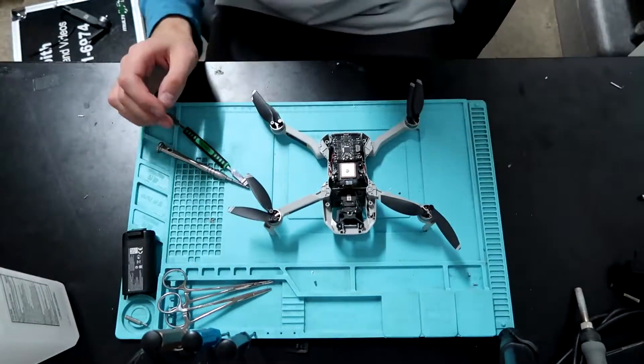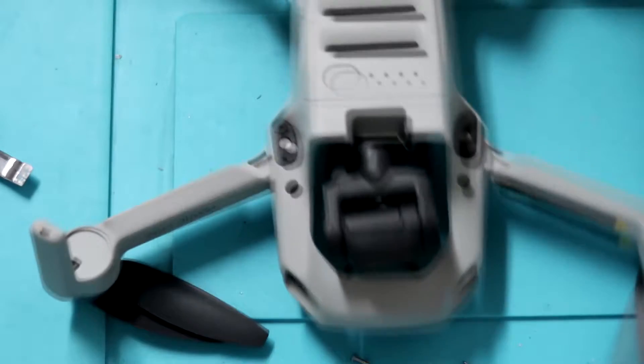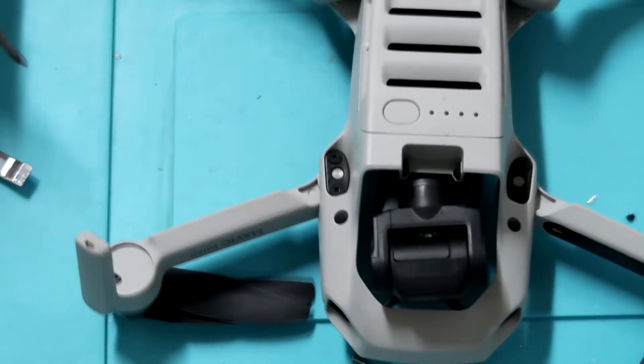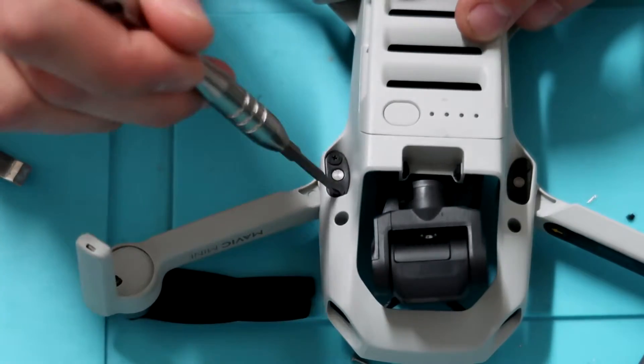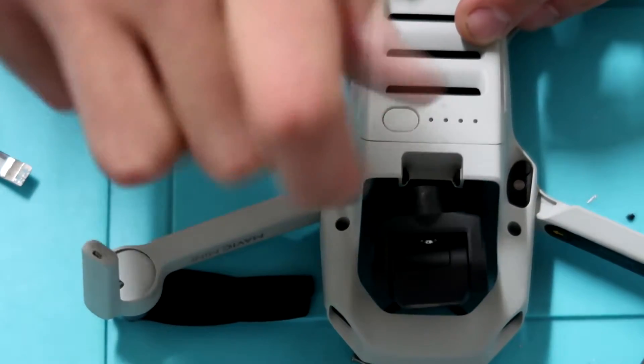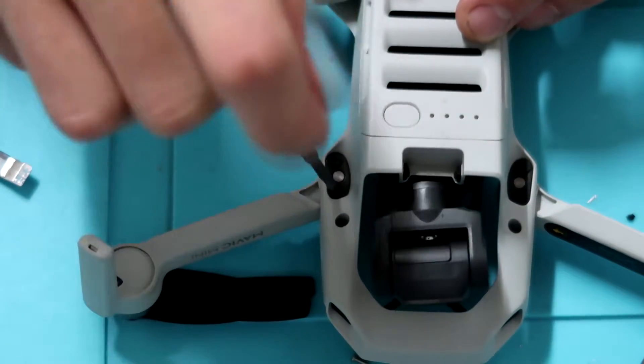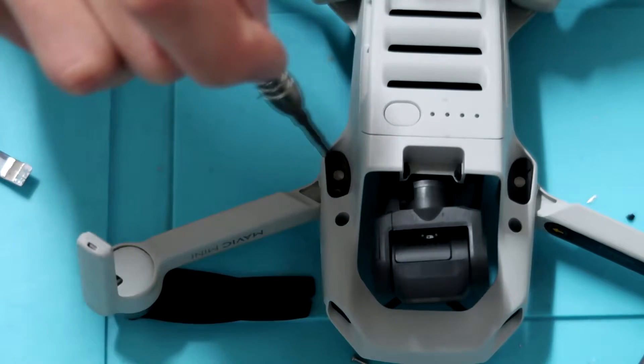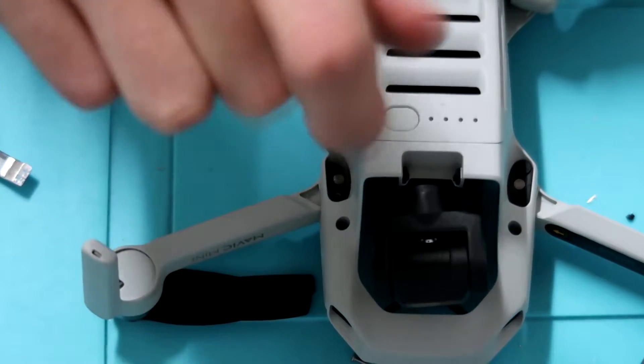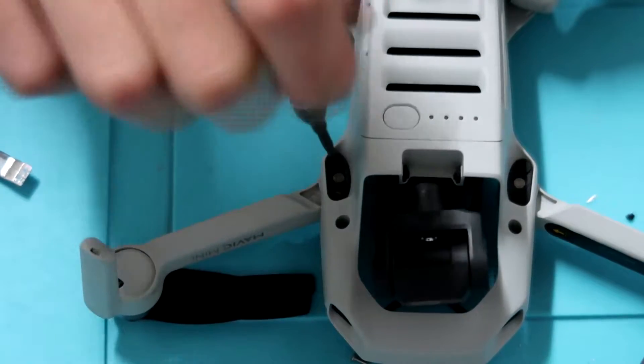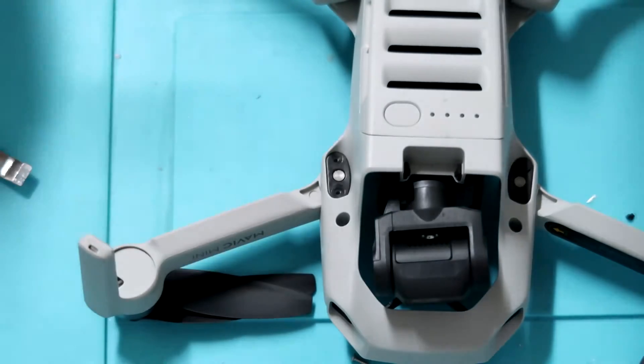So the first step is just to get that top shell removed. And then we're going to begin to take out the two screws holding in the arm bracket. And this is for the front arm. So these are two Phillips head screws. You can go ahead and remove both of those. And once you have them removed, I'm going to show you a trick on how to get underneath the arm bracket and actually pry it out of the frame.